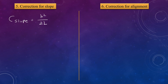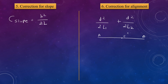The fifth correction is the correction for slope: C_slope = h² / (2l). The sixth correction is the correction for alignment, also known as bad ranging. If a point D deviates from the true line AB, the formula is: C_alignment = d² / (2l₁) + d² / (2l₂), and this correction is always negative.